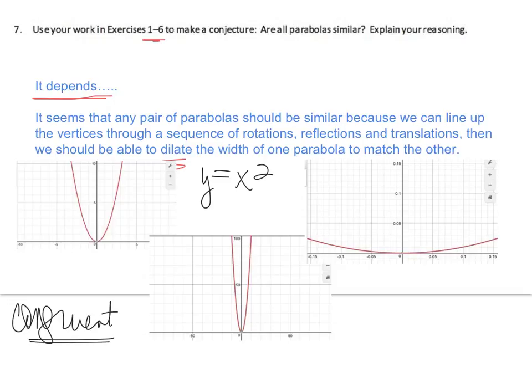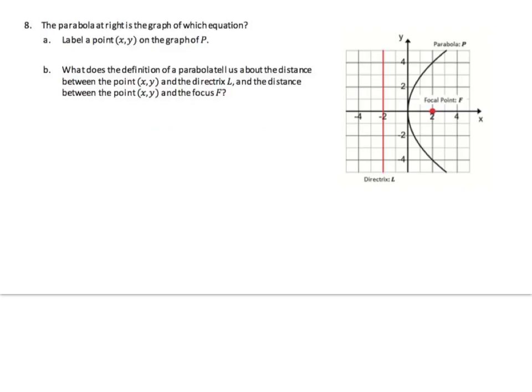Different scales on the horizontal and vertical axis just change how we view the parabola. The images look to be a dilation of the original when the scale is changed. Okay, we're on exercise 8: we're going to derive the analytic equation for the parabola, which we've done before.